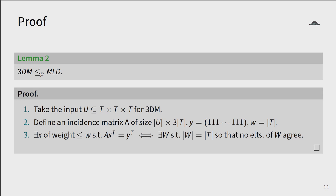Now we'd be done if we can reduce 3DM to MLD. This means that we can solve 3DM in polynomial time if we have an algorithm to solve MLD in polynomial time. Using the input of 3DM as a subset U of T^3, we construct an incidence matrix A of size U times 3T, and the input to the MLD problem is given by this matrix A, a vector Y of all 1s, and w equaling the cardinality of T.